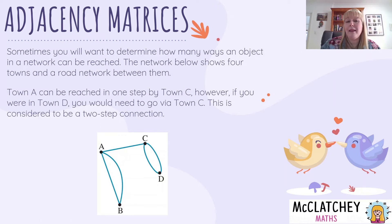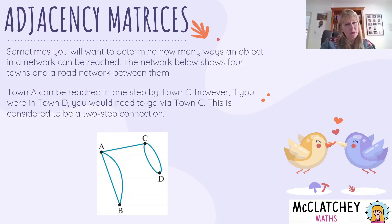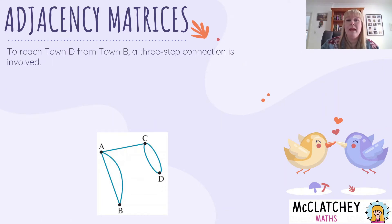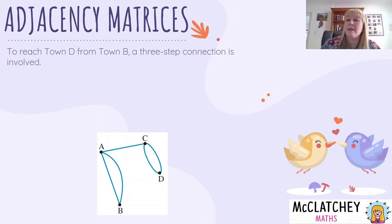If I wanted to go from A to B and then back to C, it's actually going to be a three step pathway. So just bear in mind, this is what we're talking about with one step, two step connections, three step connections, and so on. If I want to go from D all the way down to B, I need to pass through C and A — that's another example of a three step connection.